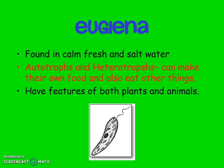Euglenas are common in freshwater, and the euglena does not contain a cell wall — so remember, it's not a plant. It is a protist that does contain chloroplasts. It's found in calm, fresh, and saltwater. One thing you need to know is that the euglena is autotrophic — it can do photosynthesis — but it also is heterotrophic, meaning it can make its own food but also eats other things. It has features of both plants and animals.